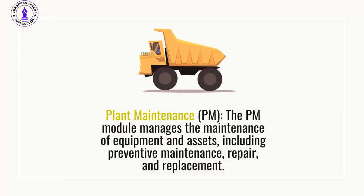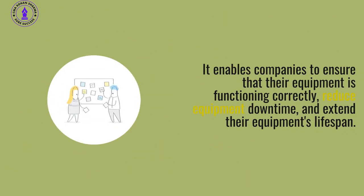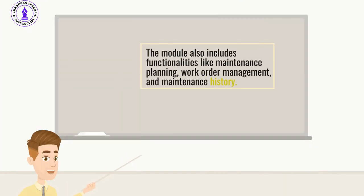Plant Maintenance (PM): The PM module manages the maintenance of equipment and assets, including preventive maintenance, repair, and replacement. It enables companies to ensure that their equipment is functioning correctly, reduce equipment downtime, and extend their equipment's lifespan. The module also includes functionalities like maintenance planning, work order management, and maintenance history.